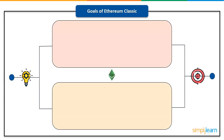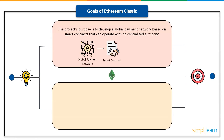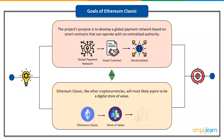The Ethereum Classic project has seen several modifications and additions since the split. The project's purpose is to develop a global payment network based on smart contracts that can operate with no centralized authority. Ethereum Classic, like other cryptocurrencies, will most likely aspire to be a digital store of value, meaning you can save and exchange it while maintaining its worth — a purchasing power that may be swiftly converted to cash or used to purchase another asset, just like money.